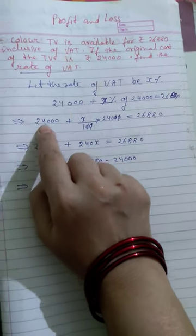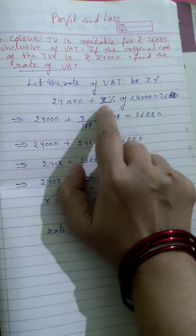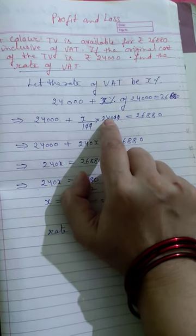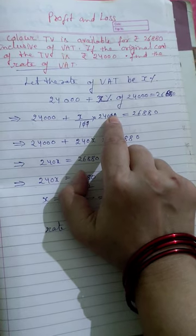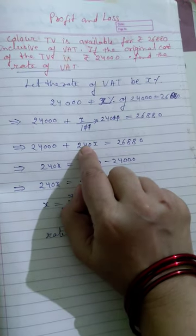24,000 - we'll write x percent as x upon 100. So this becomes 100 into 24,000. The two zeros cancel, so we get 240x.